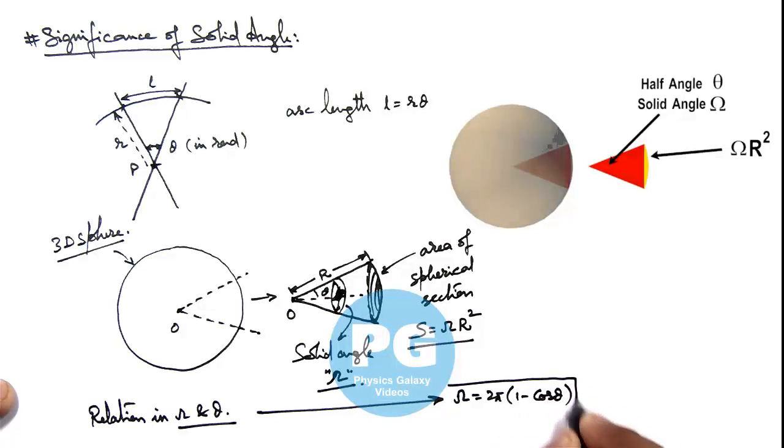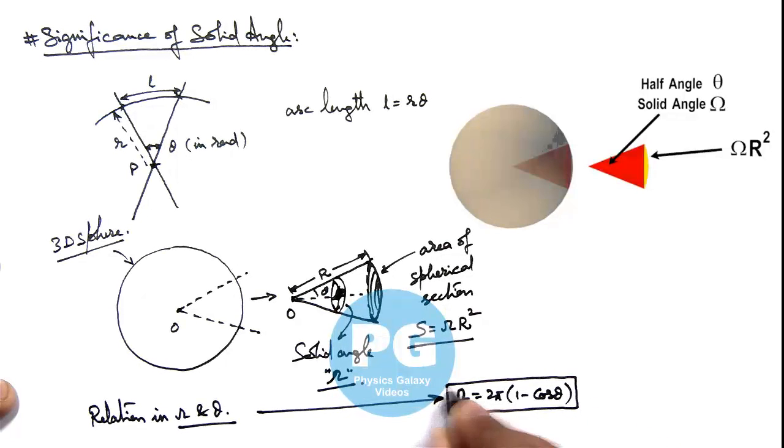Because this is extremely useful. As for any given conical surface, the half angle of cone is generally known to us, and by using this expression we can find the value of solid angle. How the expression comes, we are going to take up in the next section.